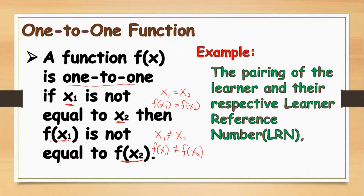We have here an example in a real-life situation: the pairing of a learner and their respective Learner Reference Number. As you have observed, each learner in our school has a different LRN, and no two students share the same LRN. That is why we can say that this real-life situation represents a one-to-one function.